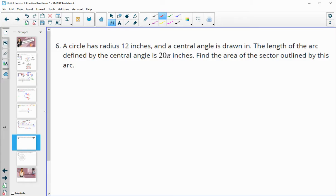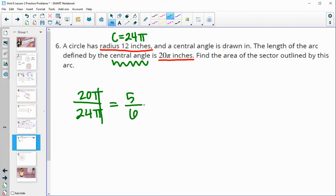Number six, a circle has a radius of 12 inches and a central angle is drawn in. The length of the arc defined by the central angle is 20 inches. So the arc length is 20 inches, the radius is 12. Find the area of the sector outlined. So we would want to figure out how big the central angle is so we know what portion of the circle we have. So if the radius is 12, we know the whole circumference would be 24 pi. So our whole circle arc length or circumference is 24 pi, and we have a 20 pi length of just our little arc. So if we divide these out and then reduce 20 over 24, both divide by 4, so this is 5 sixths of the circle.